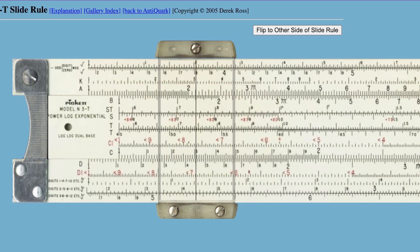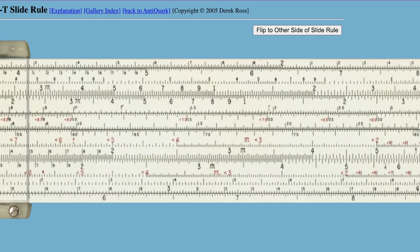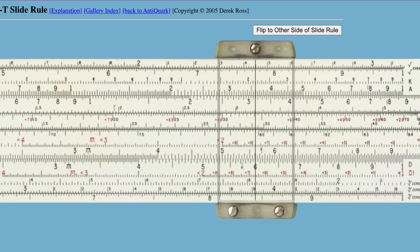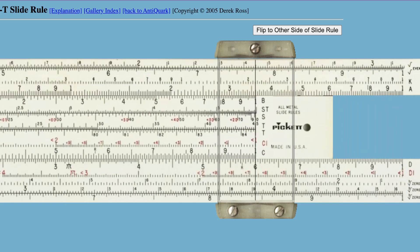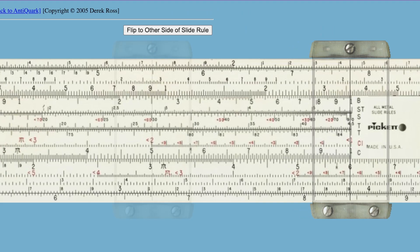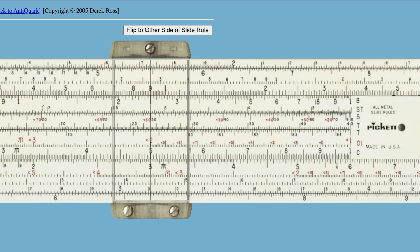To quickly find the different components of your vectors, all we have to do is come out here to our velocity, which is 6. If we put the 1 of the index of the C scale directly over the 6, we can look up on the S scale and come down to 30, and we will directly read off the value of sine 30 times 60. As you can see down here, just to the left of pi, is 3.